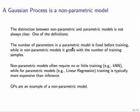In a non-parametric model, the number of parameters grows with the number of training samples. So for Gaussian processes, we have the covariance matrix that keeps growing as we add more data points.